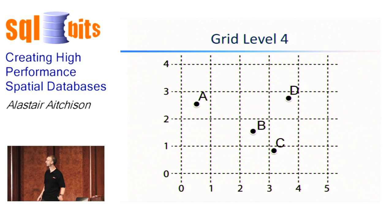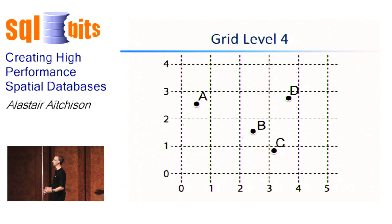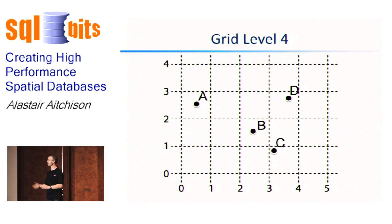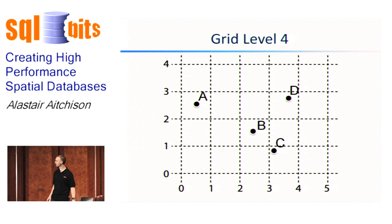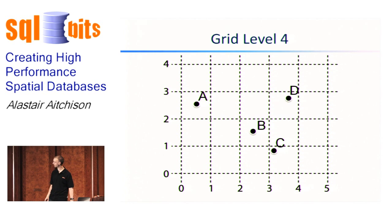If we just have a look at a picture, this is what our table now looks like. We've got our four points A, B, C, and D. The dotted lines there represent the level four grid cells in our index. Now let's suppose we actually wanted to write a query and find out which of those four cells lay within this red polygon.